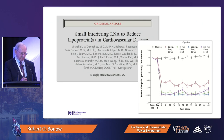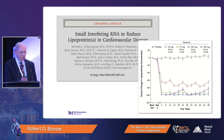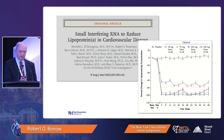PCSK9 inhibitors lower Lp(a), but not dramatically. We now have data on new drugs, such as this paper just published by the OCEAN investigators in the New England Journal of Medicine, presented at the American Heart Association, showing that olpasiran — a small interfering RNA — really decreases Lp(a) to levels never seen before in individuals with elevated Lp(a). This would be an interesting drug to test in patients developing aortic stenosis or at risk for it.